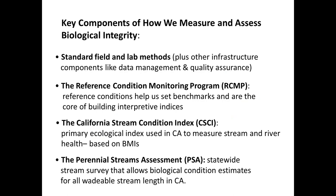First I'll describe our standard field and lab methods and other infrastructure components like data management and quality assurance. I'll talk about our reference condition monitoring program. Reference conditions allow us to set benchmarks or expectations and are the core of building interpretive indices for bioassessment data. One of those interpretive indices is the California Stream Condition Index. We also have indices for algae and for physical habitat, but I'll focus on the CSCI. And then I'll talk about the Perennial Streams Assessment, which is a statewide survey that allows biological condition estimates for all wadeable stream length in California, followed by examples at regional and site-specific scales.